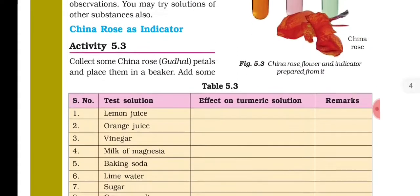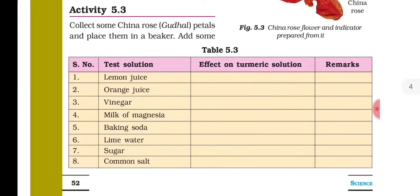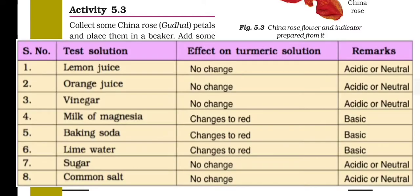In table 5.3, we test solutions with turmeric and note the effect and remark. Lemon juice — no change, remark: acidic and neutral. Orange juice — no change, remark: acidic and neutral. Vinegar — no change, remark: acidic and neutral. Turmeric solution does not change color with most acidic substances. Sugar and common salt also show no change — remark: acidic and neutral.